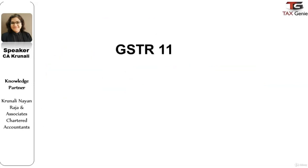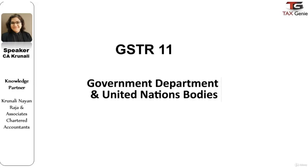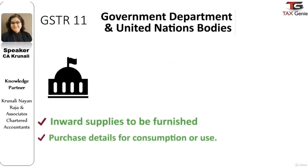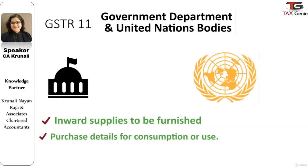Finally, GST Return 11 is to be filed by government departments and United Nations bodies. Such persons are issued a unique identity number under GST and are required to file GST Return 11, which is due by the 28th of the month following the month for which the statement is filed. For instance, details for July 2017 would be due by 28th August 2017. This return would contain details of inward supplies as well as details of purchases and consumption made by the United Nations bodies or government departments.